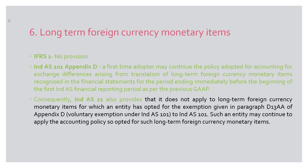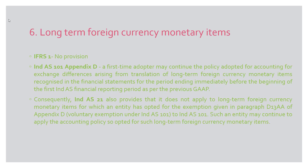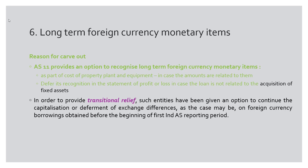Ind AS is giving a voluntary exemption allowing entities to continue to adopt the same accounting policies they had been following before. Consequently, Ind AS 21, which deals with the effects of changes in exchange rates, also provides that it will not apply to long-term foreign currency monetary items for which an entity has opted for this voluntary exemption. Under our earlier accounting standards, we had an option to recognize long-term foreign currency monetary items either as part of the cost of property, plant and equipment or as part of a loan charged over the period of the loan.